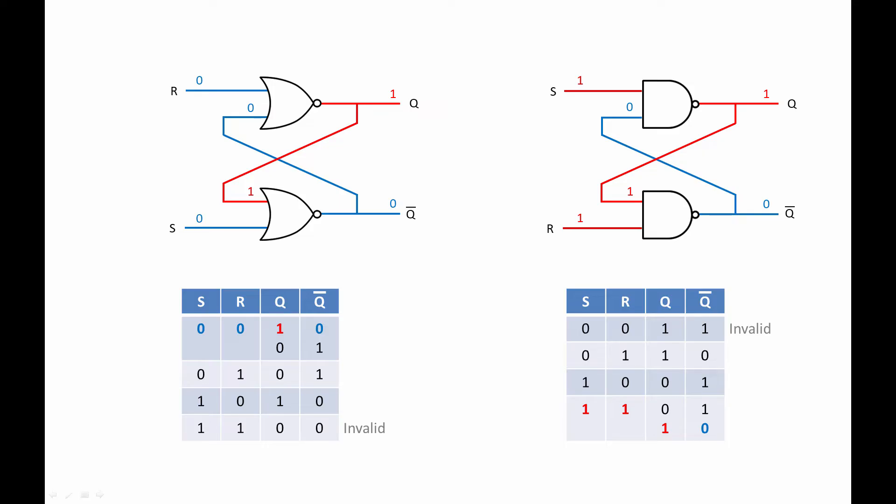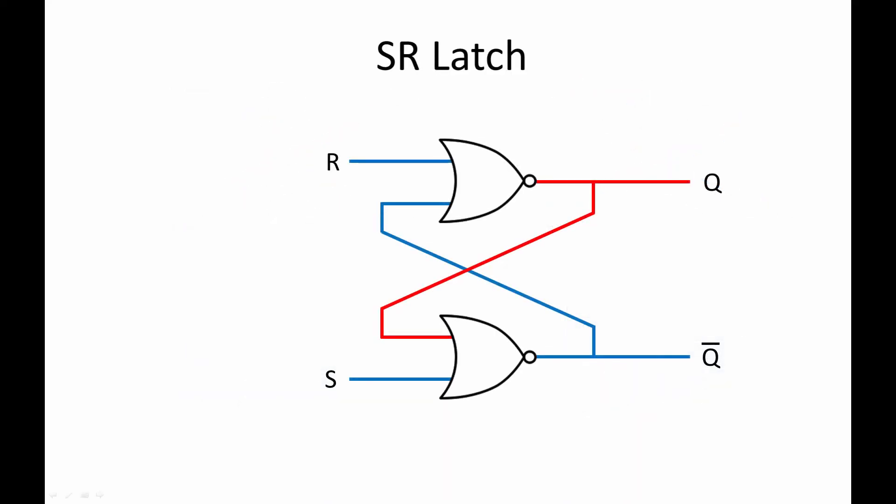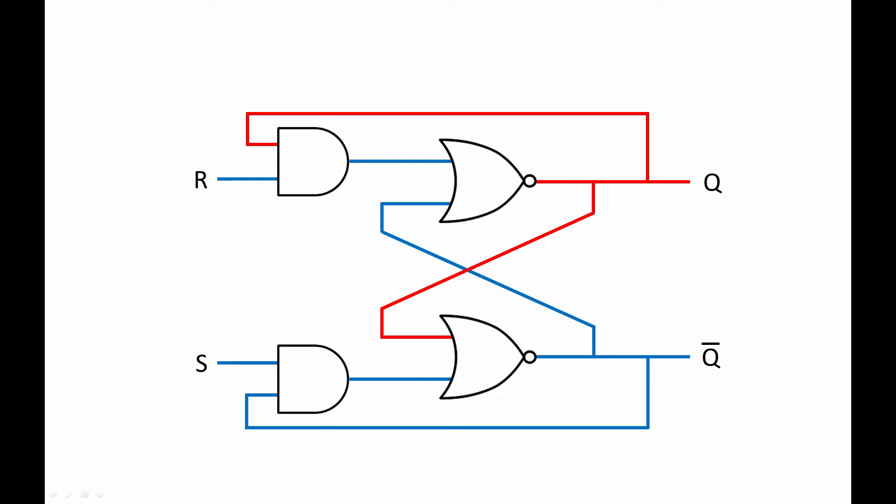So, how does a JK flip-flop solve the invalid inputs problem? Well, before we think about this, let's take a look at something that we will call, for want of a better name, a JK latch. Here's our simple active high SR latch based on NOR gates. We'll add a pair of AND gates immediately after the inputs. Then, we'll feed the value of output Q into the top AND gate, and the value of NOT Q into the bottom AND gate. Finally, we'll re-label the inputs, J and K. J to set, K to reset.